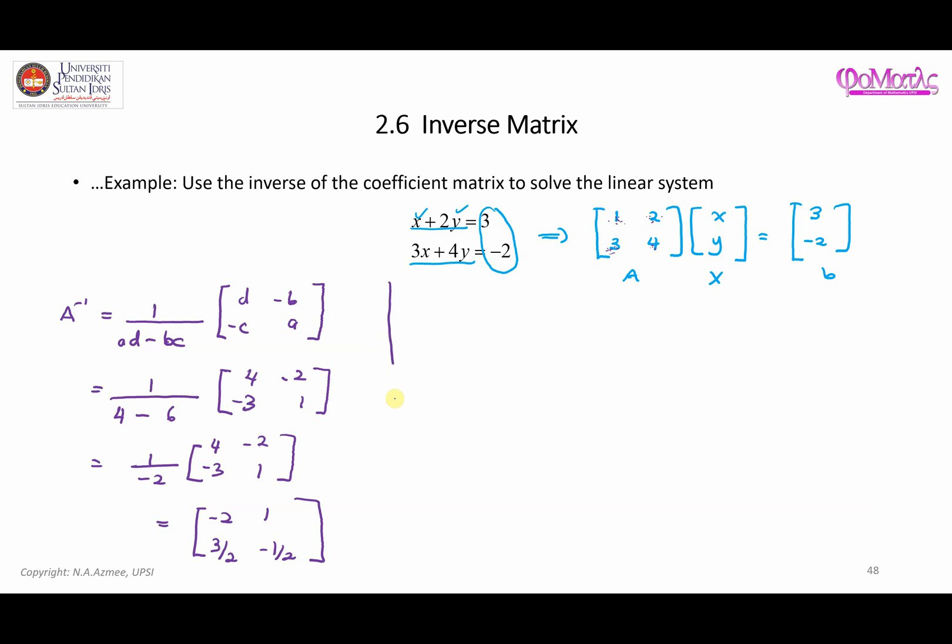Then we can solve the value of X. X is X and Y. So X and Y here is equal to this matrix, which is negative two, one, three over two, negative half. And you multiply it with B. B is three and negative two. So we got B straight from this part right here.